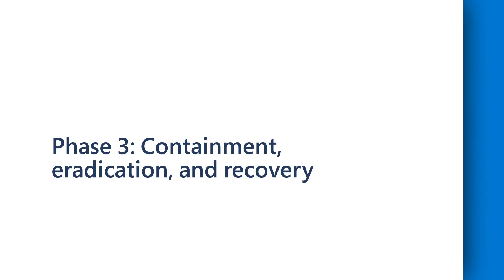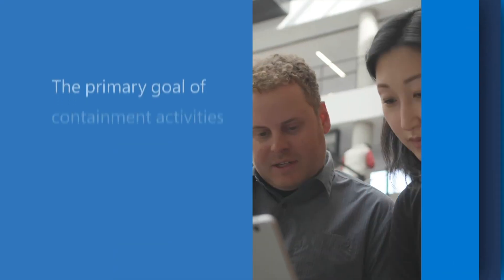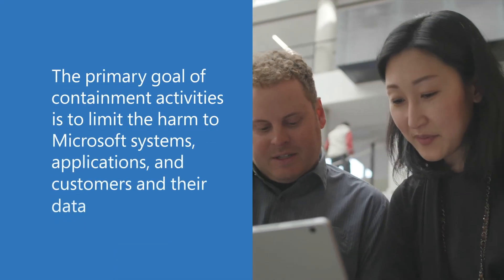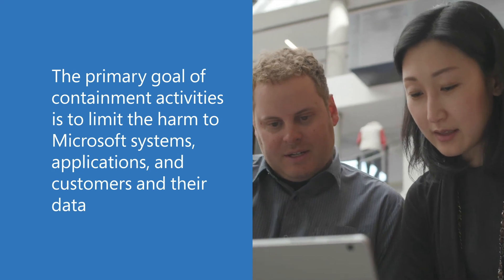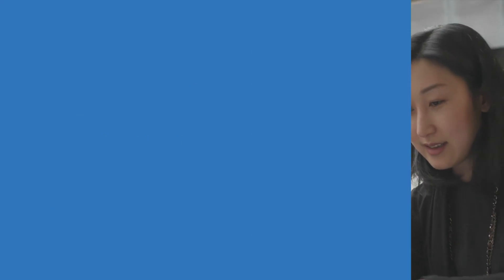Now let's talk about how we mitigate a threat in phase three: containment, eradication, and recovery. The primary goal of containment activities is to limit the harm to Microsoft systems, applications, and customers and their data. After an incident or breach has been detected, it is important to contain the intrusion before the adversary can access more resources or cause additional damage. In order to minimize the risk and increase our ability to respond quickly, Microsoft utilizes various automated response capabilities as a part of our overall response efforts.